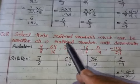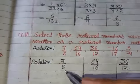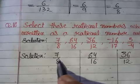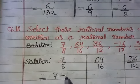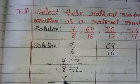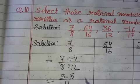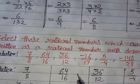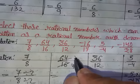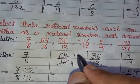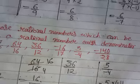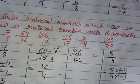Question 10: select rational numbers which can be written with denominator 4. For 7/8, we cannot divide by 2 cleanly because dividing 7 by 2 gives 3.5, so 3.5/4 — not a valid integer rational. For 64/..., we cancel: 16/4, so denominator is 4.